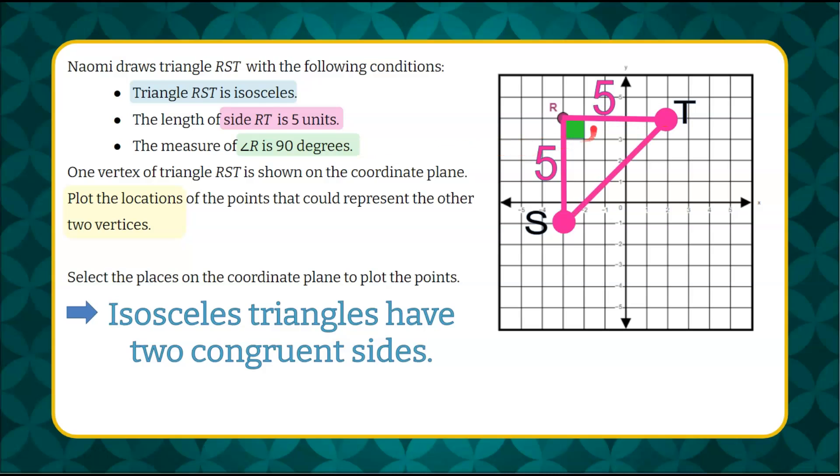So again, I have angle R is 90 degrees. I have side of my triangle RT, and then I know that I need a second side that's 5 in length, so I did that to form my right angle, and now I have placed those coordinates.